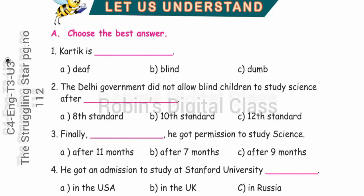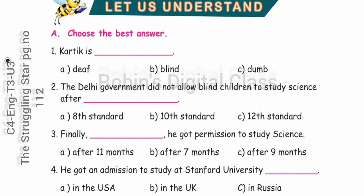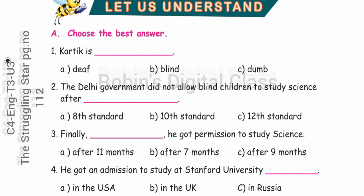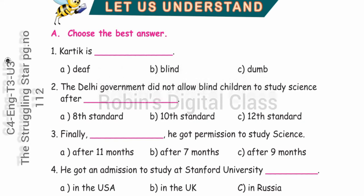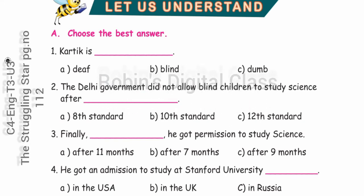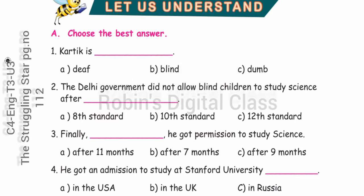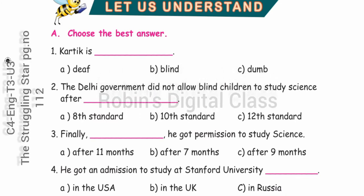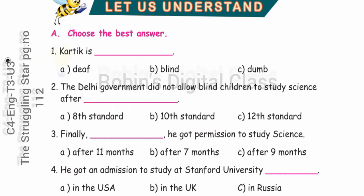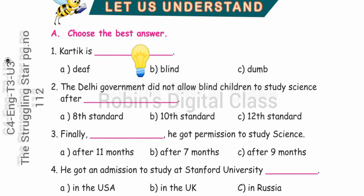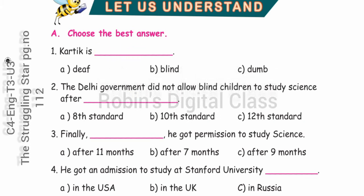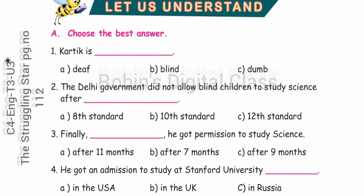Class 4 English, Term 3 — The Struggling Star, page number 112. Let us understand Exercise A: Choose the best answer. Question number one: Karthik is — option B — blind. Question number two: The Delhi government did not allow blind children to study science after 10 standard — option B — 10 standard.